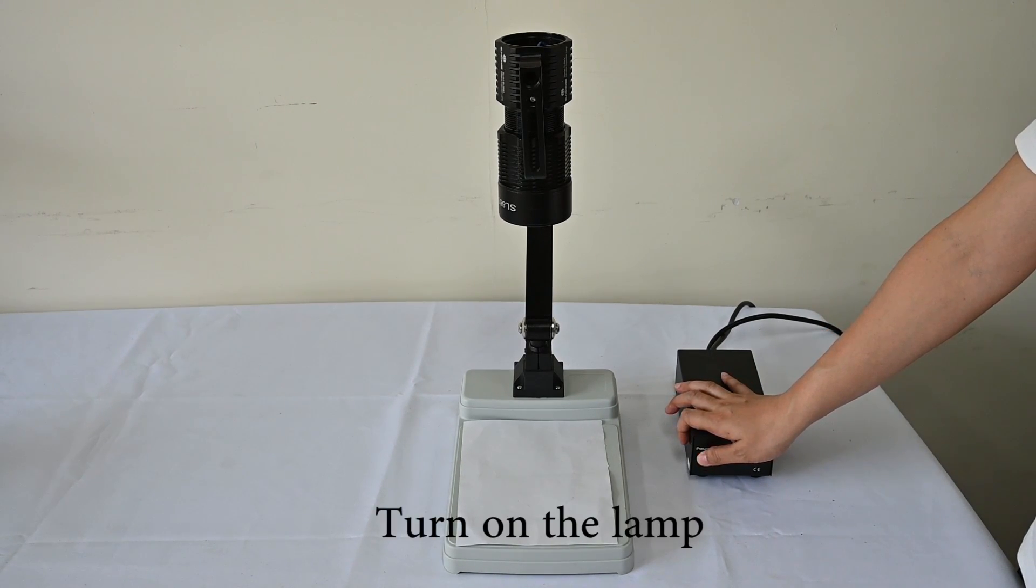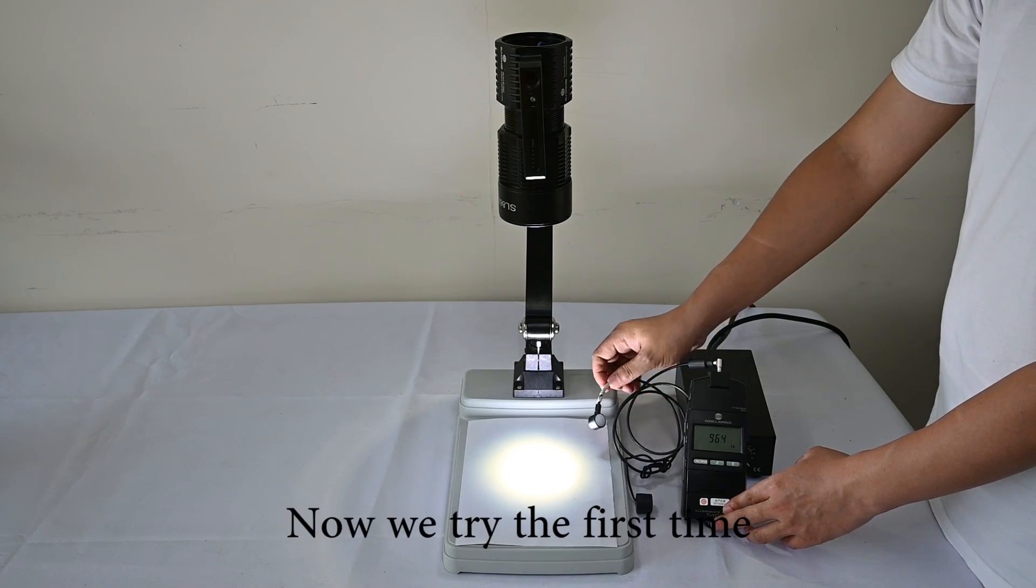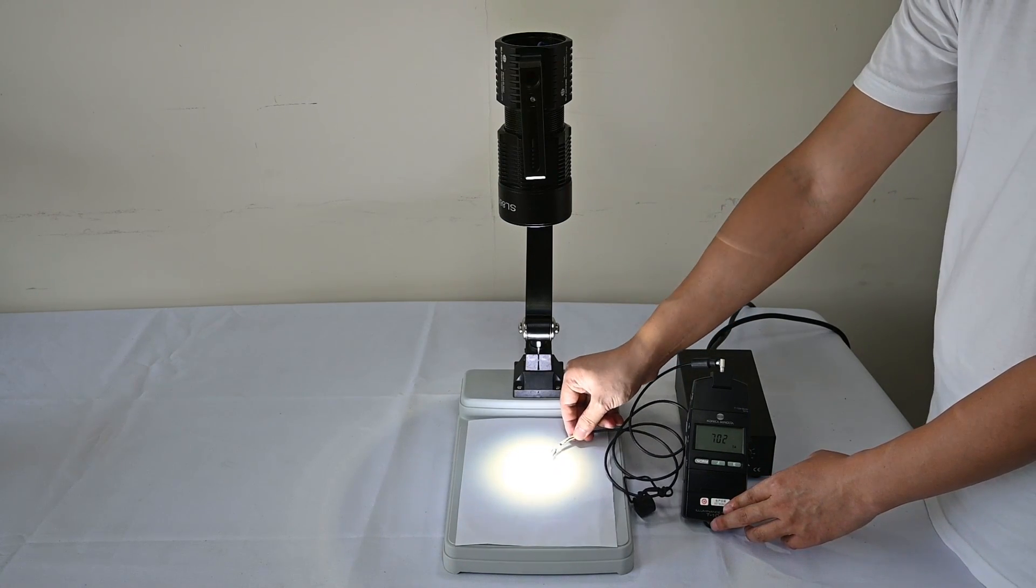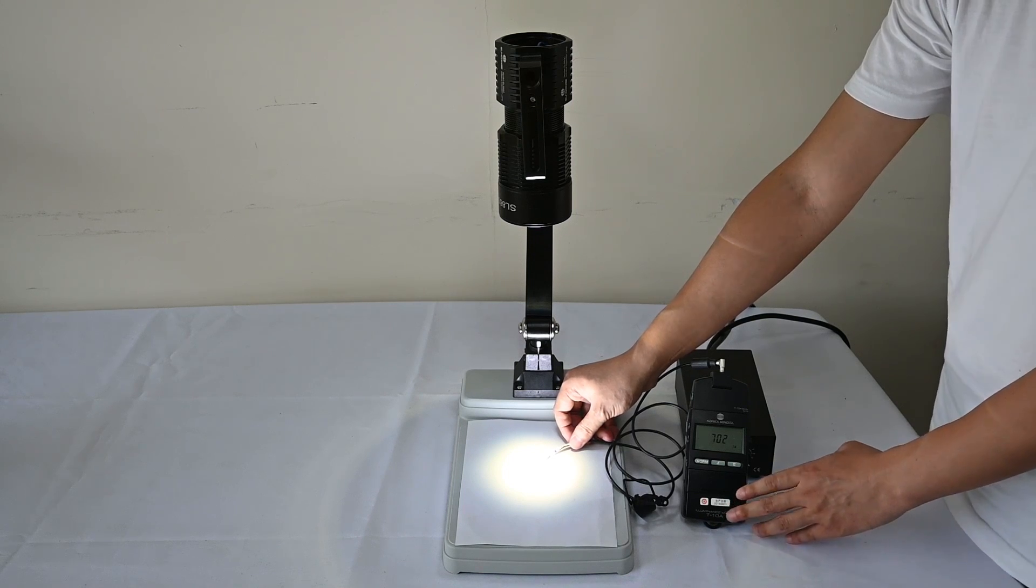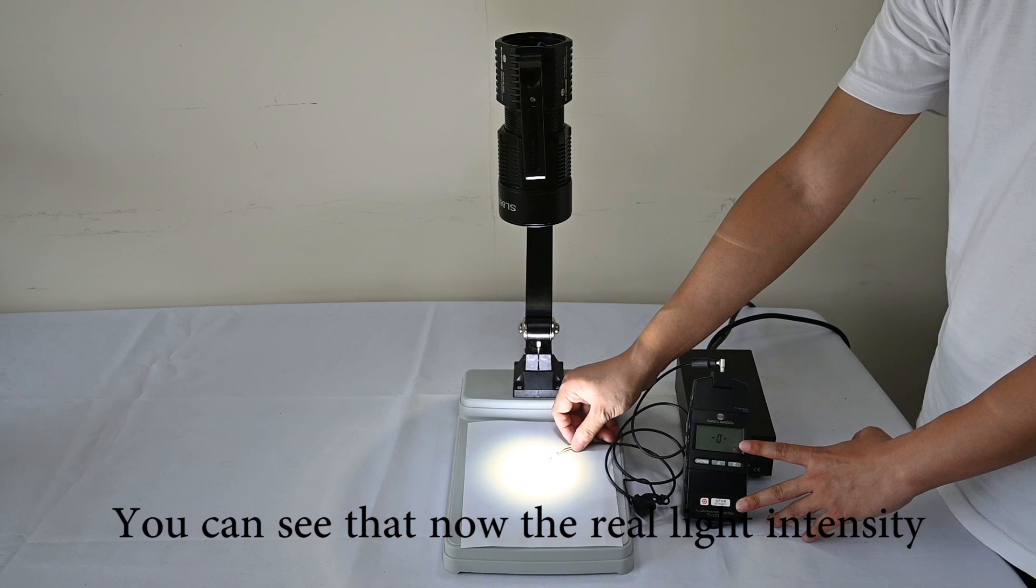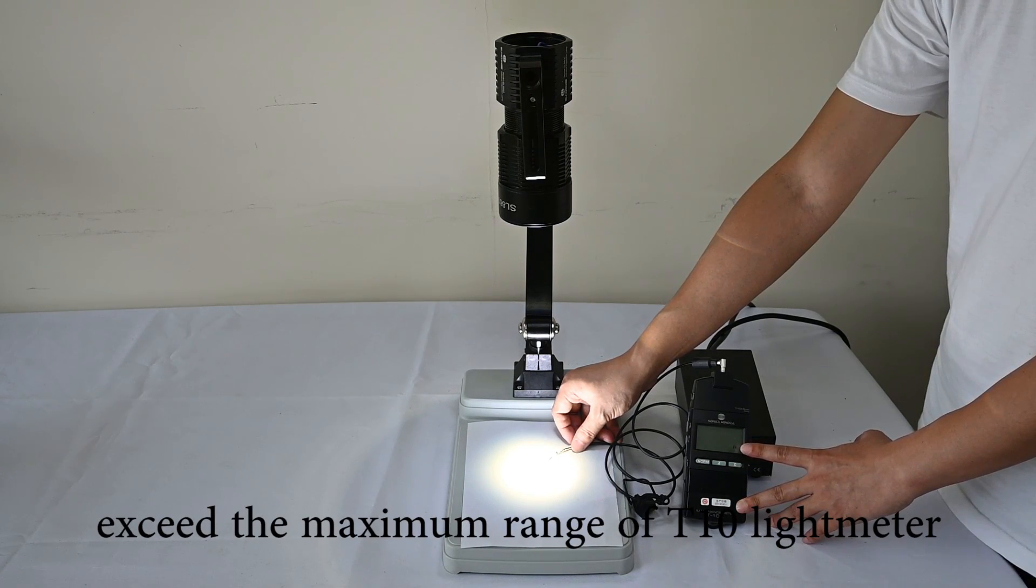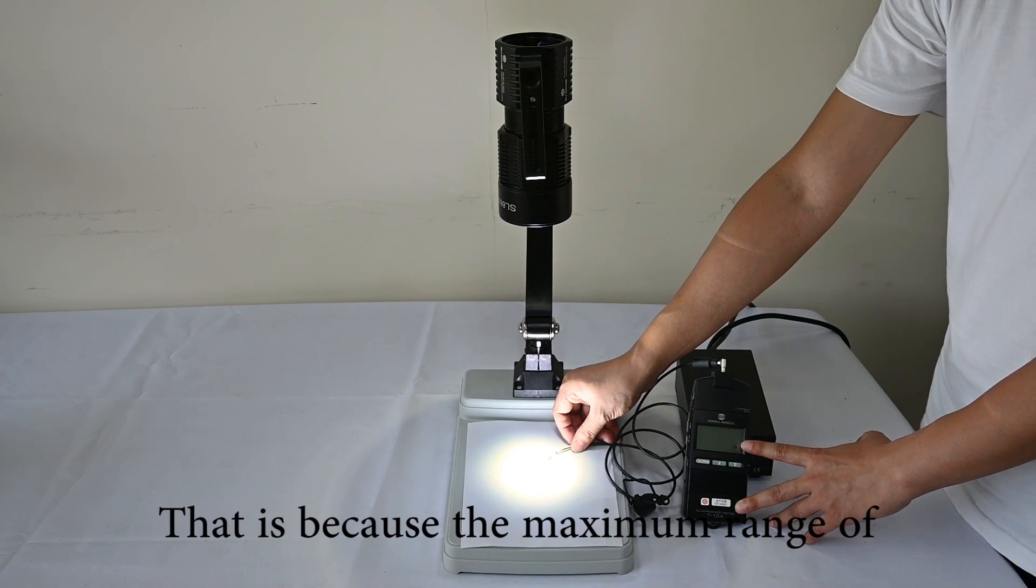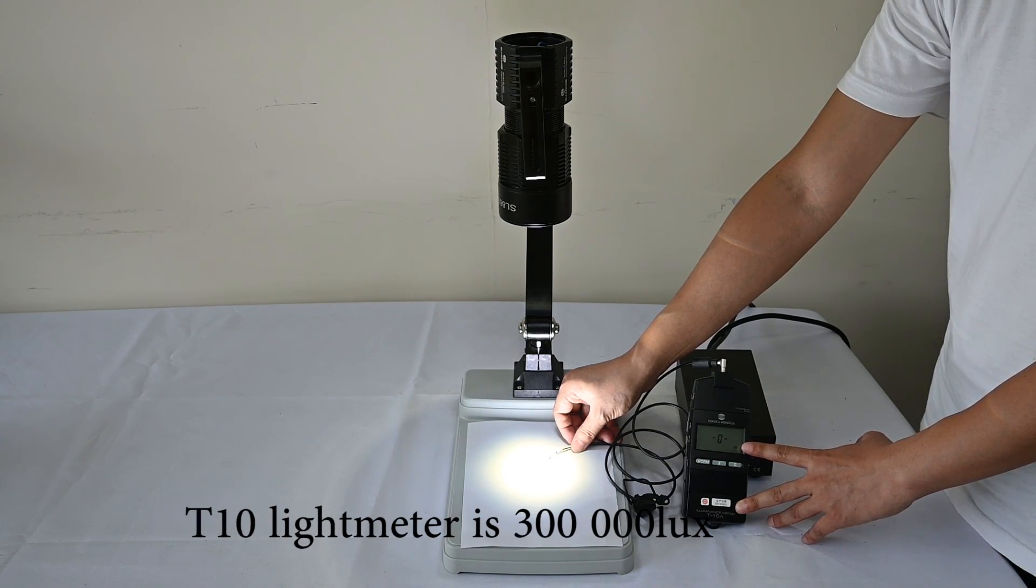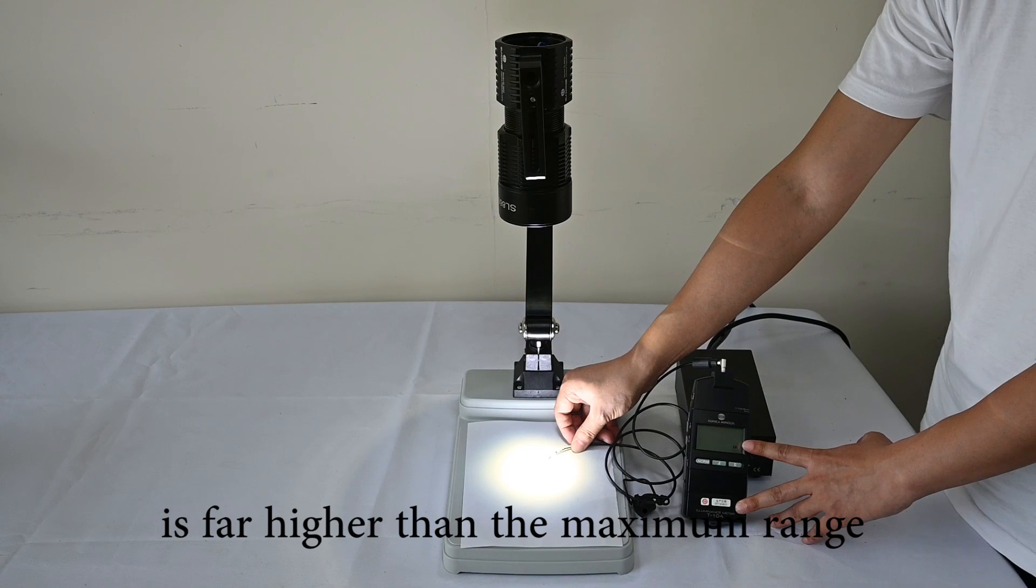Turn on the lamp. OK, now we try the first time. You can see that the real light intensity exceeds the maximum range of T10 light meter. That's because the maximum range of T10 light meter is 300,000 lux, and now the real light intensity is far higher than the maximum range.